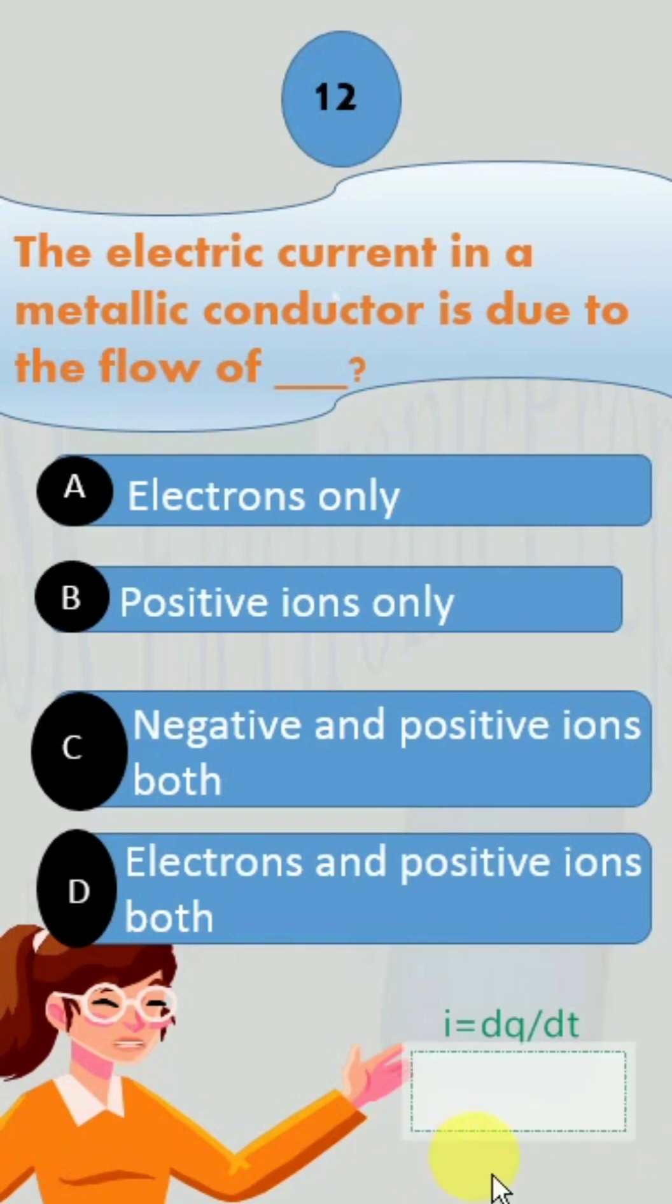Common examples of metallic conductors are copper, aluminum, gold, silver, and platinum.